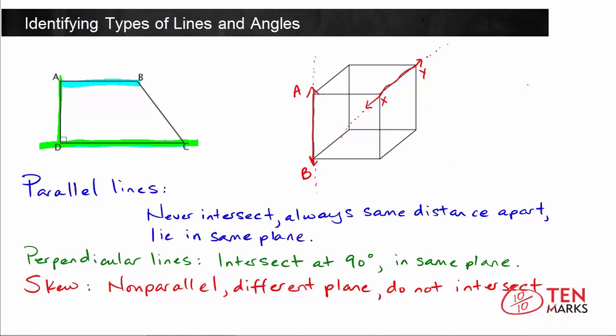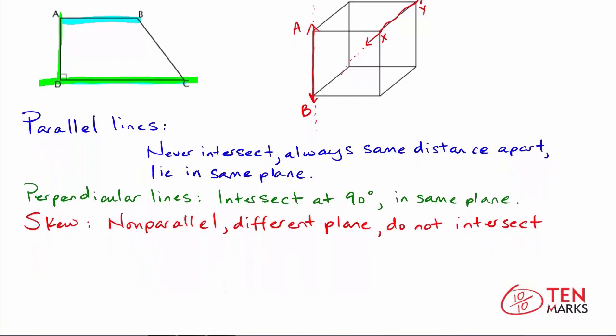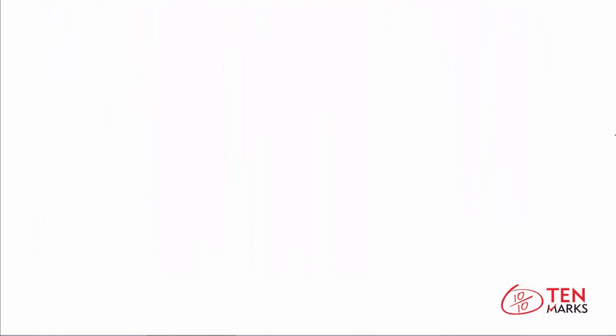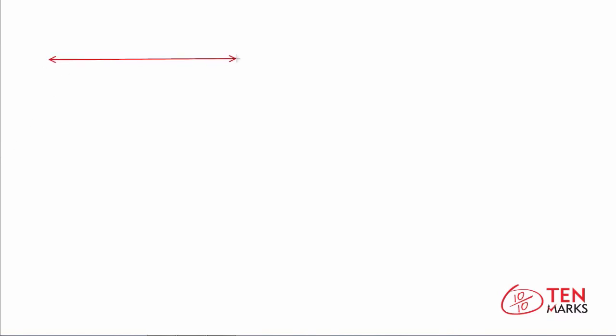Now let's talk about angles. Recall that angles are formed when you have lines intersecting, but you can also think about the measure of a straight angle, such as a straight line. A straight line is an example of a straight angle. The measure of a straight angle is always 180 degrees.